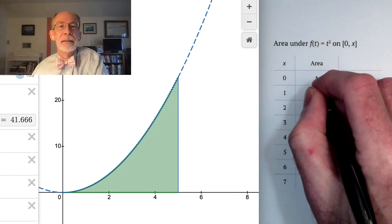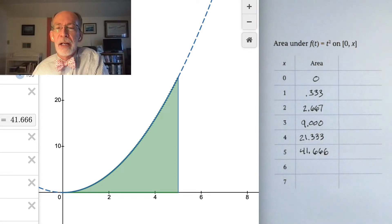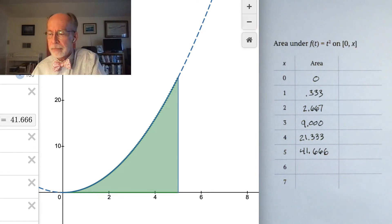And I'll go one more for the time being. I'll go up to x equals 5. And this area is about 41.666. And of course, if we go from 0 to 0, that's got to be 0. Now, let's unpack these things a little bit.